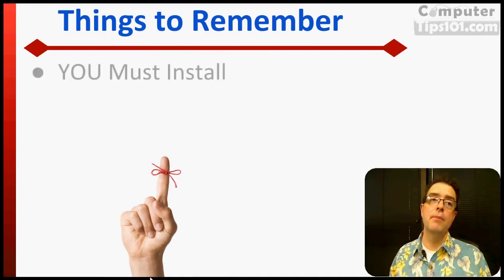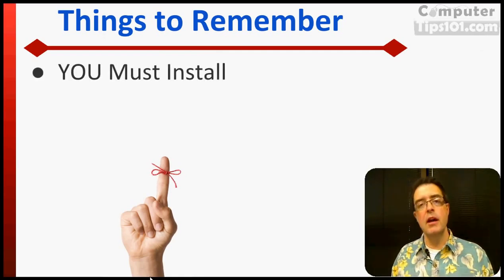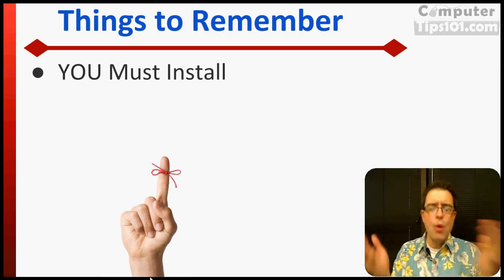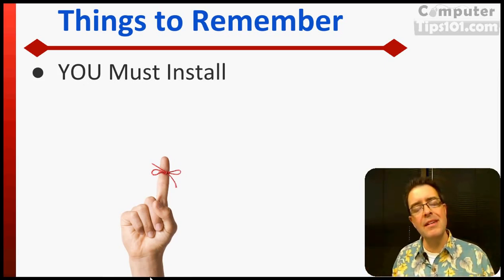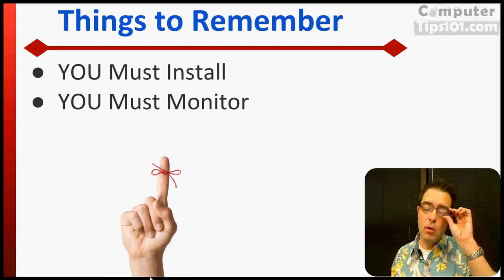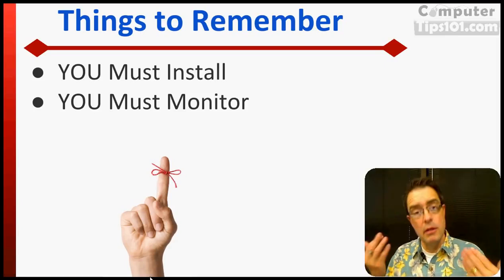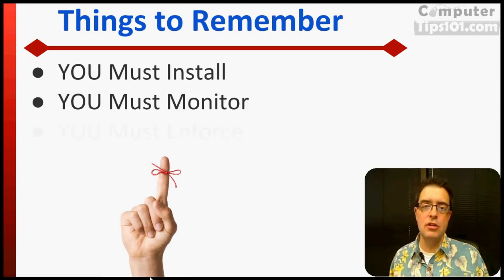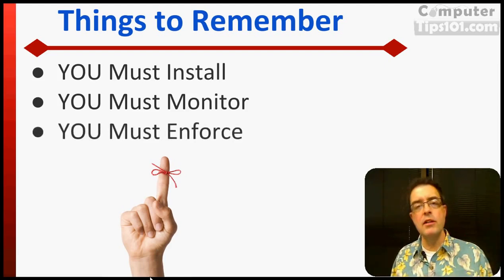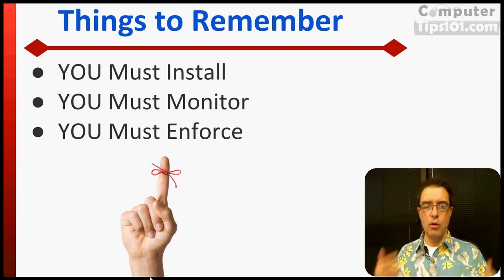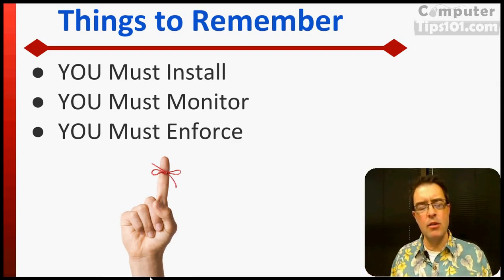There are a few things to remember. Number one, you must be the one to install it — you can't give your kids this and say install some filtering software. No, you have to do this. And it's easy; it's not very high-tech. You can do it — just follow those simple instructions. You must monitor it: if you're installing something like CovenantEyes and it's sending you reports, look at them and see where your kids are going. Make sure they're not trying to get into things they shouldn't. You must enforce: your kids have got to know what the consequences are if they try to go somewhere or do go somewhere they shouldn't.